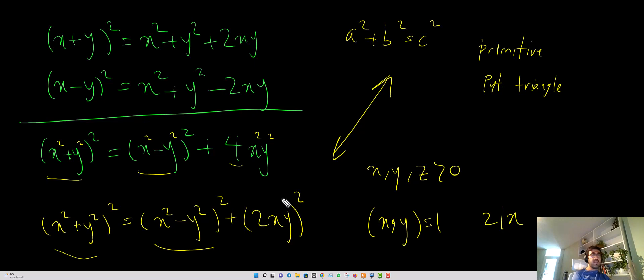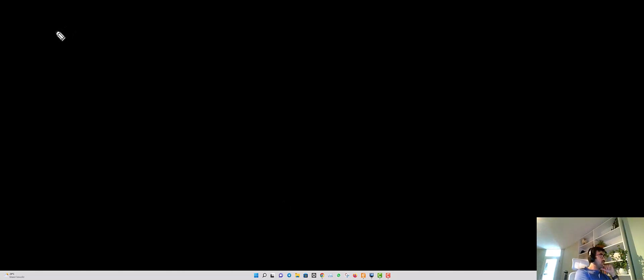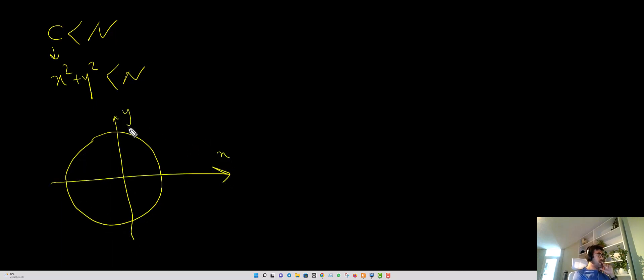So, first of all, remember that we were interested in triangles with c less than n. And now you can see where the first pi comes from. This is the equation from circle.